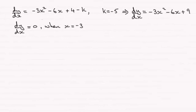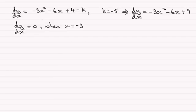Hi, so for this part we're being asked to find the nature of the stationary point to the curve. We've previously seen that the gradient dy/dx was given by this equation here: minus 3x squared minus 6x plus 4 minus k.